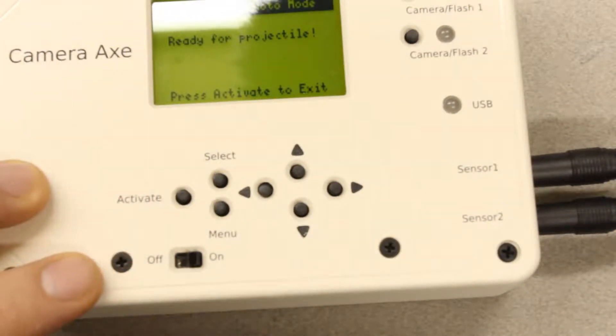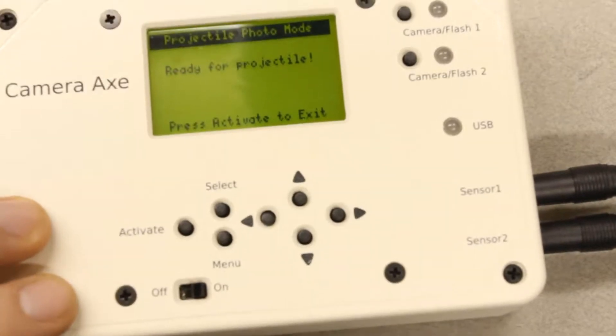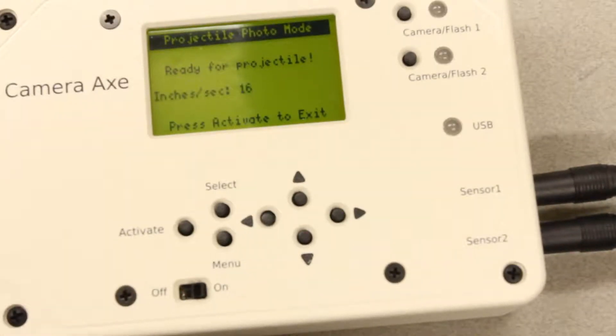I'm just going to put my finger through the sensor pair. And you can see there that it reports back the speed that the projectile went through the sensors, and it's reporting inches per second because it's relatively slow. My finger's not very fast, but if you shot a bullet through there, it would report back in feet per second, or you know, meters per second if you were in the metric system.